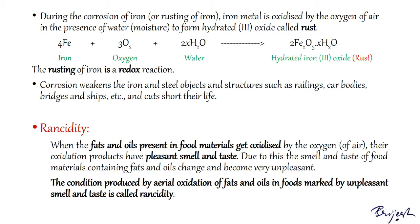The rusting of iron is a redox reaction involving unwanted oxidation of iron. Rust is a soft and porous substance which gradually falls off from the surface of an iron object, exposing fresh iron below, making corrosion a continuous process. Corrosion weakens iron and steel objects and structures such as railings, car bodies, bridges, and ships, cutting short their life. Significant money must be spent each year to prevent corrosion and replace damaged structures.